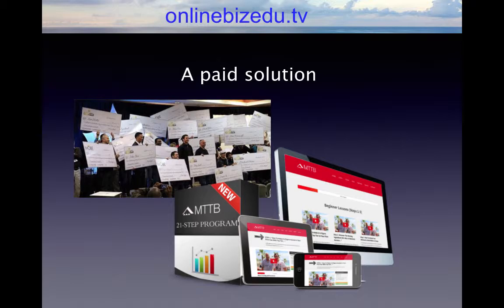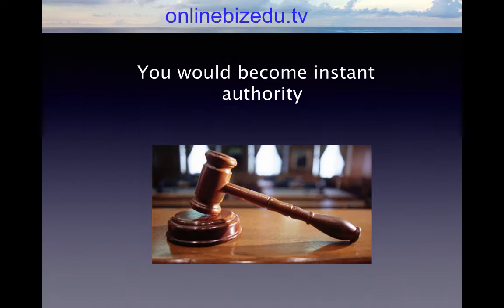Since we have five symptoms in step one and we come up with five proven solutions for each symptom, you actually have five solid reports, and if you put them all together, you have one main big report to give people. If you did everything here, you will become an instant authority.